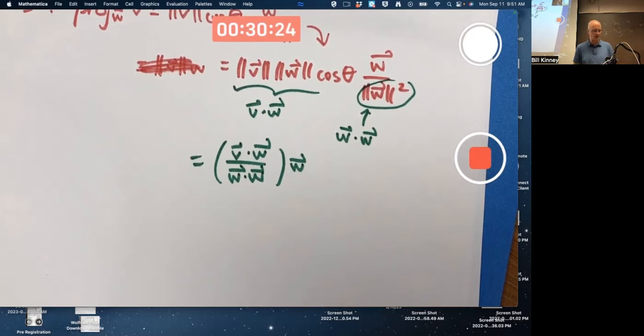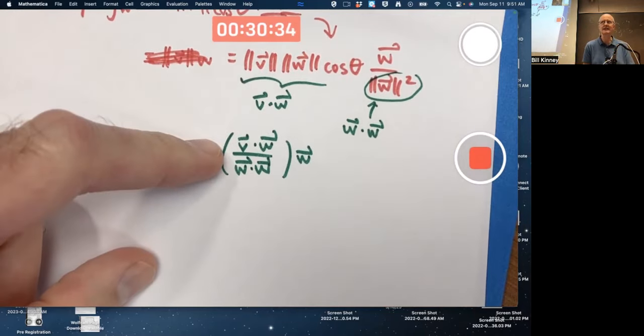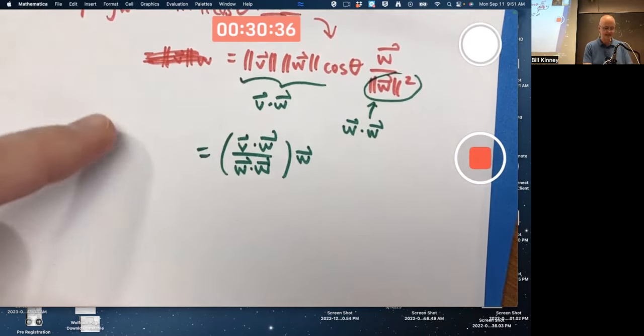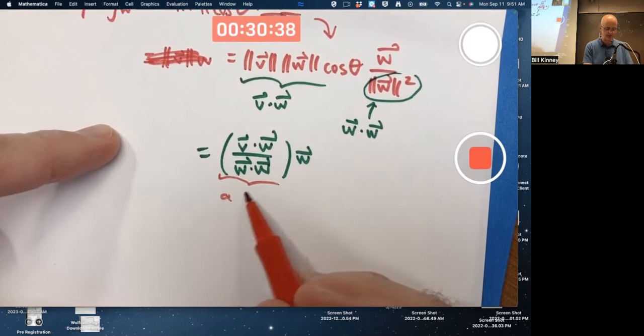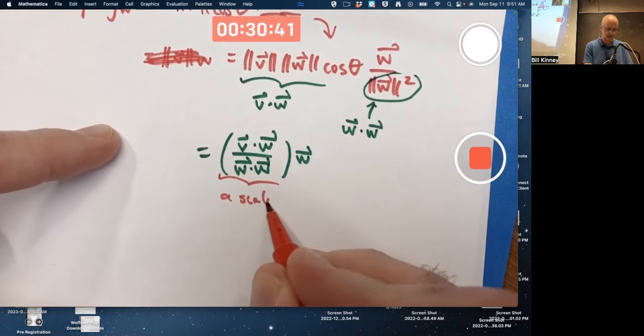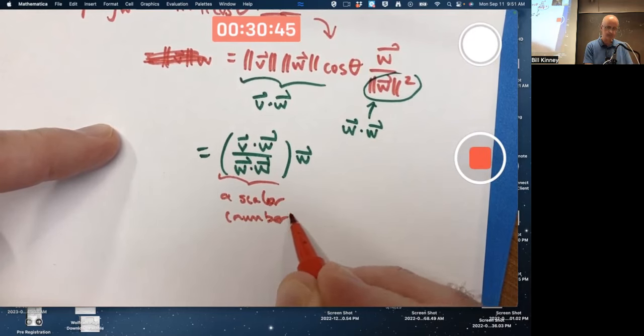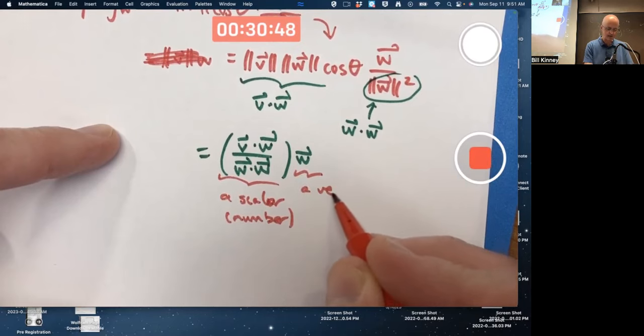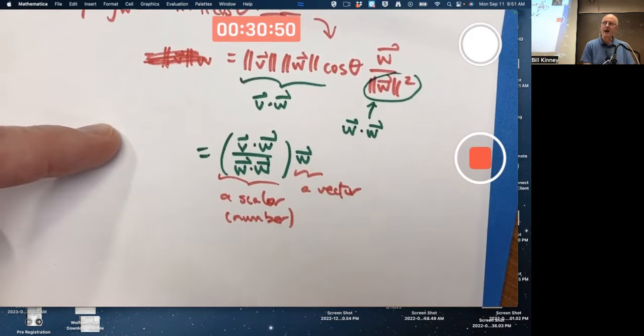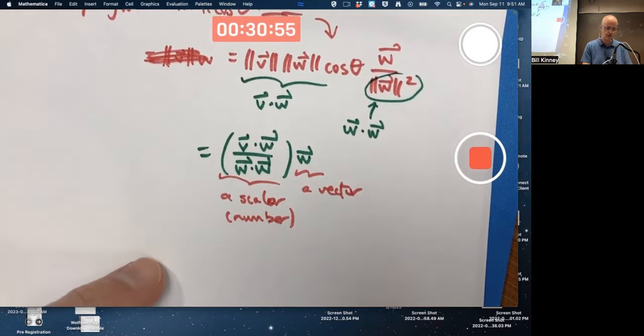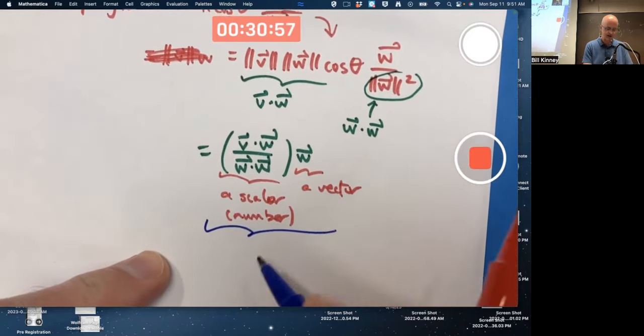It's so important to keep track of what's a vector and what's a scalar. Of course, all the V's and W's that you see are vectors. But when you take dot products, you get numbers, scalars. This is a number, a scalar. This is a vector. A number, a scalar times a vector is another vector. The answer is a vector. The whole thing is a vector.